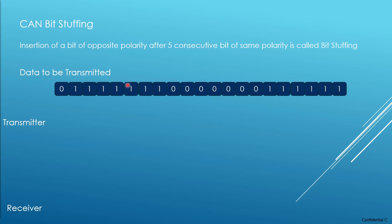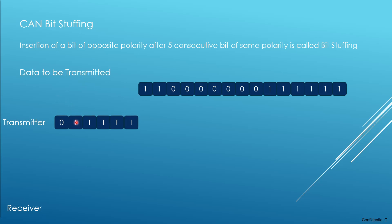Imagine you have data that needs to be transmitted onto the CAN bus. Looking at it, we have the first bit as zero, followed by seven consecutive ones, then seven consecutive zeros, and then seven more consecutive ones. The transmitter needs to handle this before putting the information onto the CAN bus — this is where the CAN bit stuffing concept comes into play. The transmitter looks for consecutive data, and whenever it encounters five consecutive bits of the same polarity, it introduces a stuffed bit at the sixth position. This stuffed bit is of opposite polarity — in this case, zero.